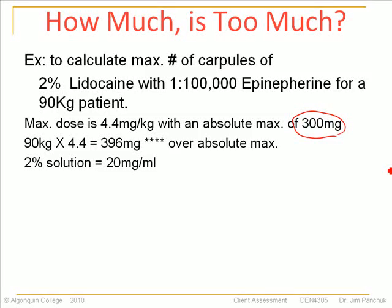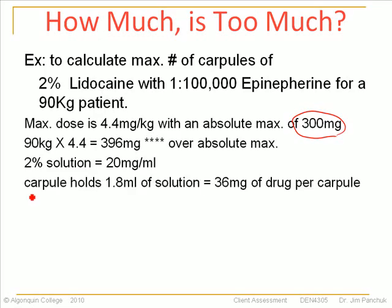It's a 2% solution of lidocaine, and a 2% solution means there's 20 mg per milliliter. A carpule holds 1.8 mL of solution, which means there's 36 mg of lidocaine per carpule of anesthetic. So every carpule of 2% lidocaine will have a total of 36 mg of the drug in it.